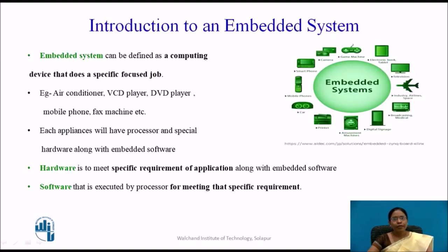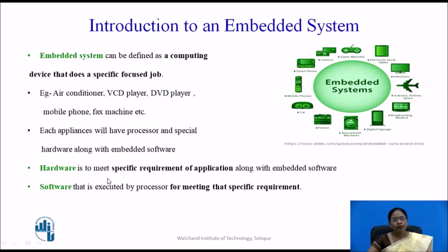An embedded system can be defined as a computing device that does a specific defined job. Examples include air conditioners, VCD players, DVD players, mobile phones, and fax machines. Each appliance has a processor and hardware along with embedded software. Hardware is designed to meet the specific requirements of applications, and the software is executed by the processor to meet that specific requirement.